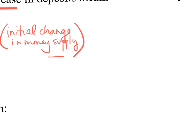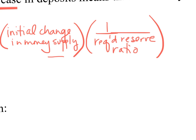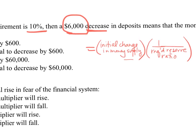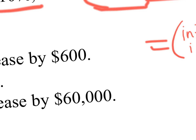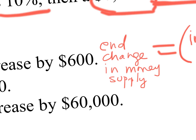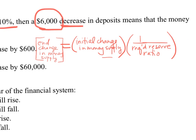The money multiplier is the inverse of the required reserve ratio. So the unified equation is: the end change in money supply equals the initial change in money supply multiplied by the money multiplier. That total change in money supply is what we're solving for with this equation.